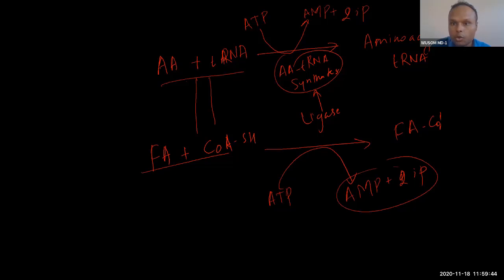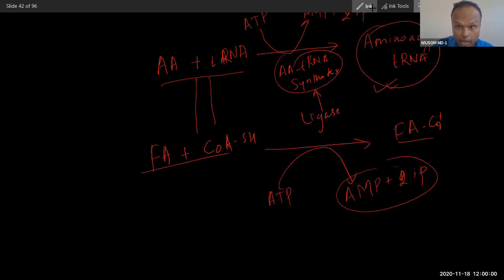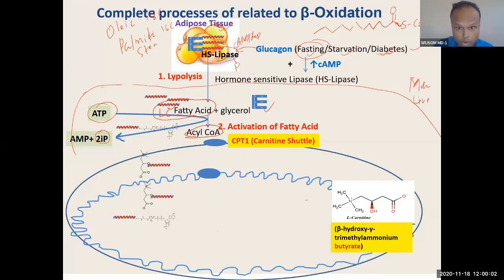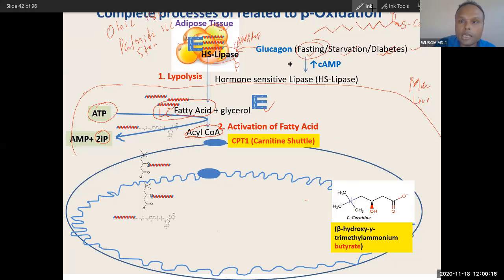This is a very important step. Just as in translation there is activation of amino acid, here there is activation of fatty acid. If you understand the principle, you will notice similarity everywhere — in genetics and in biochemistry — because the same principle is utilized everywhere. This is the only step where utilization of ATP occurs.